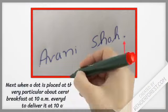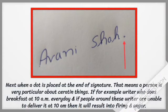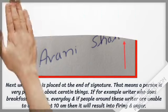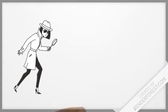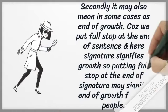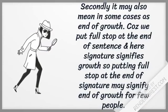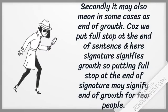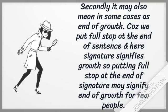Next comes when a dot is placed at the end of the signature. That means a person is particular about certain things — for example, if a writer has breakfast at 10 AM every day and people around them are not able to deliver it at 10 AM, it would result in anger. Secondly, it may also mean an end of growth in certain cases. We put a full stop at the end of a sentence, and here the signature signifies growth, so putting a full stop at the end of a signature may signify an end of growth for some people.